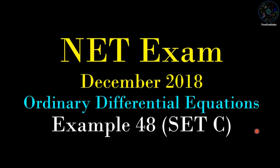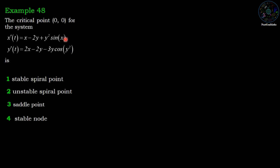Welcome friends. In this video we are going to discuss example number 48 from the NET exam December 2018, which is a problem of ordinary differential equations. The critical point (0,0) for the system: x'(t) = x - 2y + y² sin(x), y'(t) = 2x - 2y - 3y cos(y²).